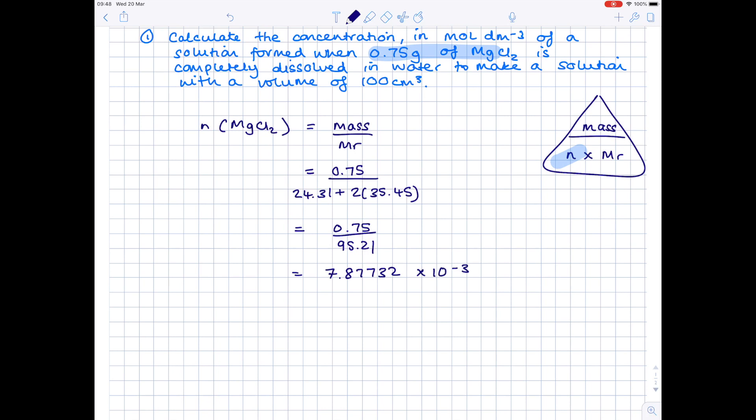Now we need to concentrate on the volume aspect of this question. So 100 centimetres cubed. And as I've already alluded to, you need to convert that value to decimetres cubed. So that's the straightforward process of just dividing that number by 1000 to get 0.1 decimetres cubed.